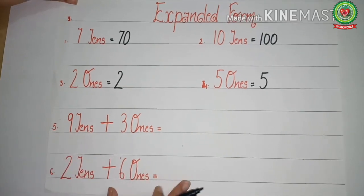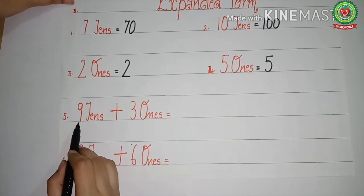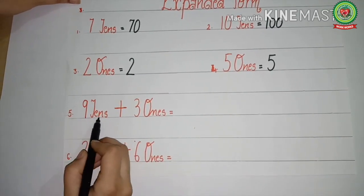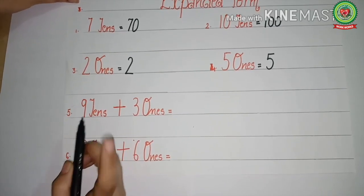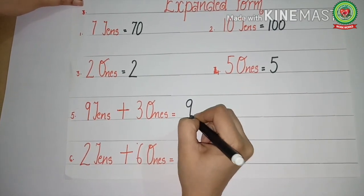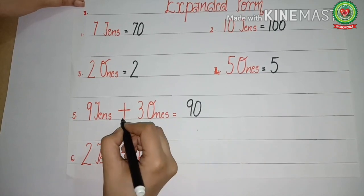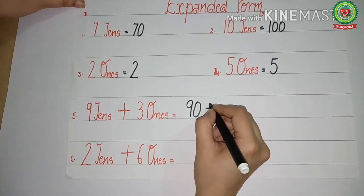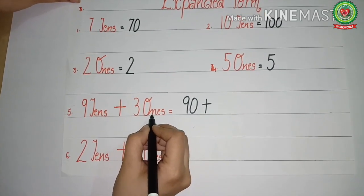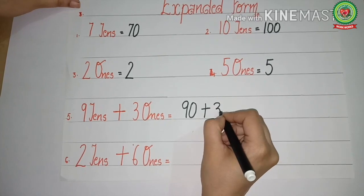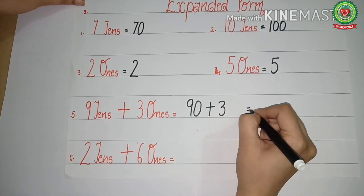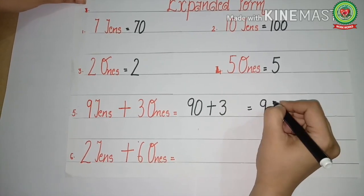See how we will do this. Read this statement with me: nine tens plus three ones. Nine tens — tens has one zero, so nine tens we will write as nine-zero, ninety. Plus three ones means three. Ninety plus three equals ninety-three. We will join the numbers.